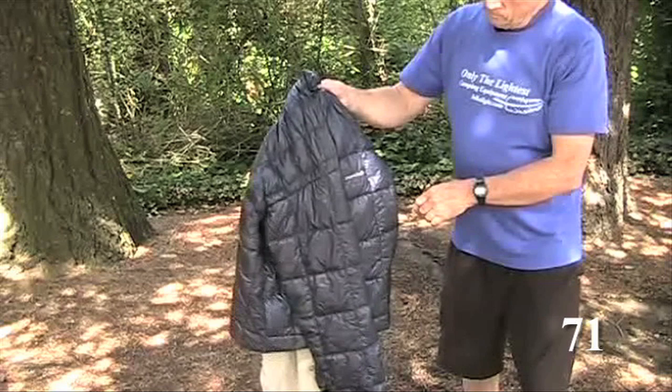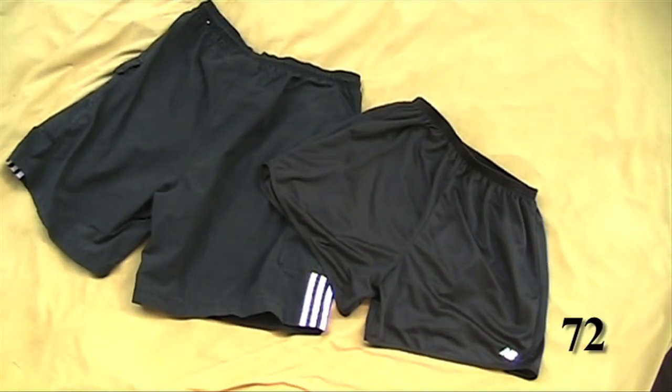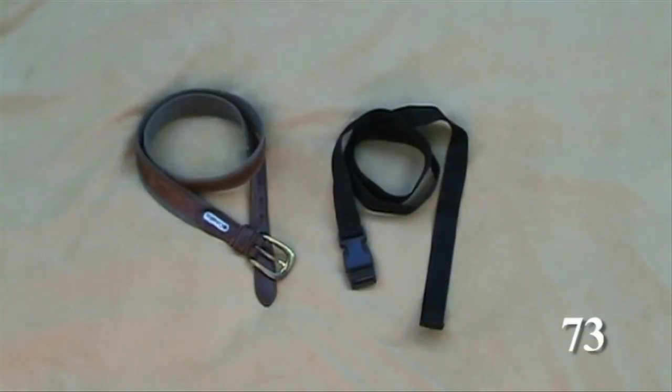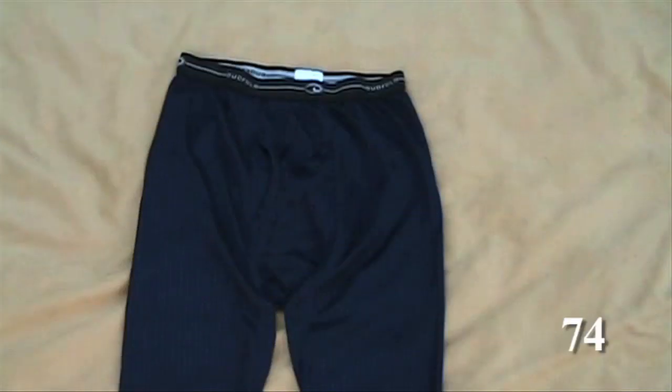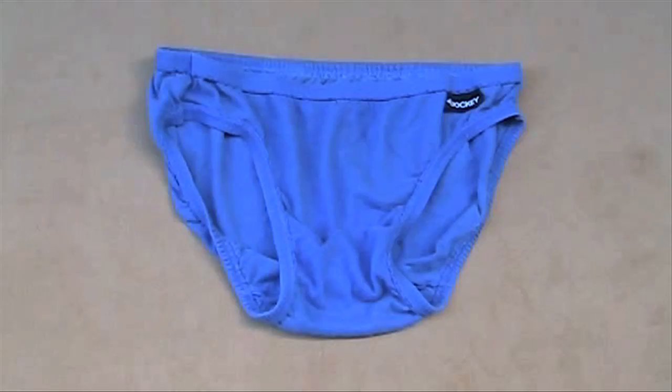Insulating ultralight down jackets weigh less than six ounces. That's t-shirt weight. Running shorts at around three ounces are much lighter than heavy cargo shorts. Leather belts are heavy. A lightweight nylon accessory strap is much lighter. Silk underwear can cut the weight in half. Bikini style underwear is light too.